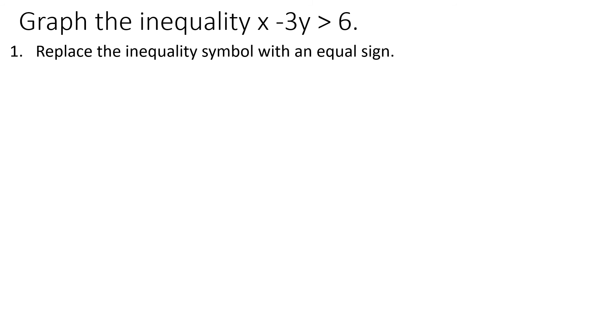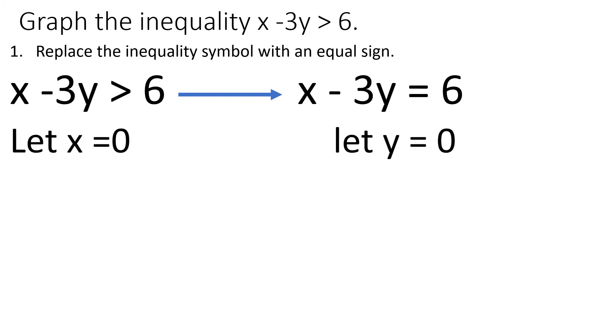Another example. Graph the inequality x minus 3y greater than 6. Replace the inequality symbol with an equal sign. So my x minus 3y greater than 6 becomes x minus 3y equals 6 for the mean time. Let x and y become 0 so that we can get 2 points. The moment we can get 2 points, we can have a line because 2 points determine a line. If x is 0, substitute, so 0 minus 3y equals 6. If y is 0, x minus 3 times 0 equals 6.